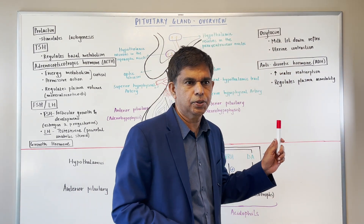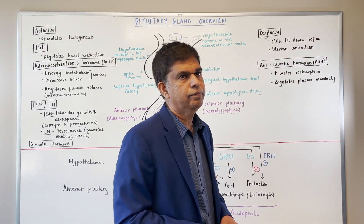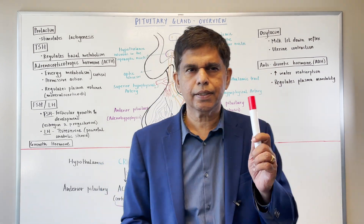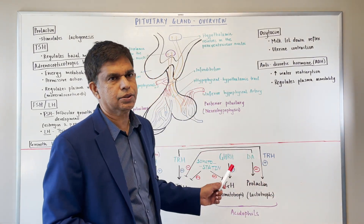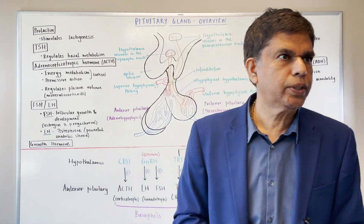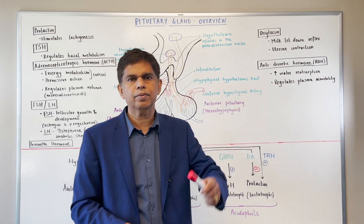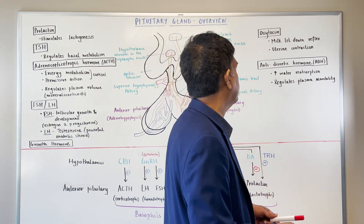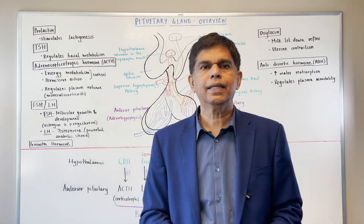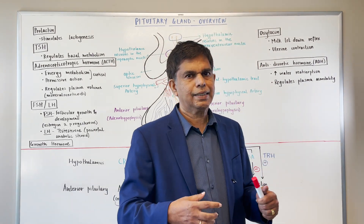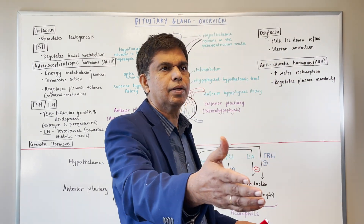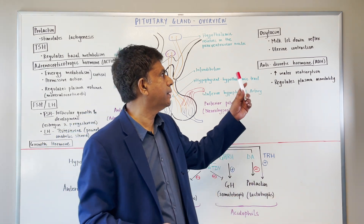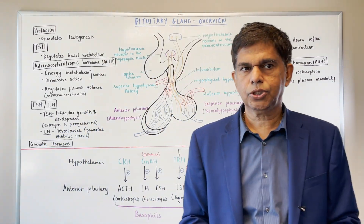When you talk about the posterior pituitary, you need to know about two major hormones: oxytocin and ADH. Let's start with oxytocin. The main thing we know about oxytocin is childbirth - it stimulates myometrial contractions and oxytocin injections are used to stimulate childbirth. It's also involved in the milk letdown reflex, helping release milk for the baby. Note that prolactin produces the milk - that's an anterior pituitary hormone - while oxytocin handles the letdown reflex and myometrial contractions.